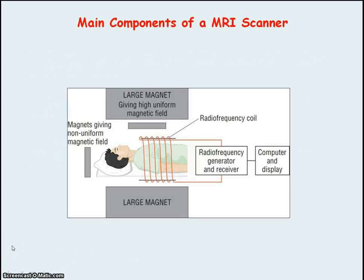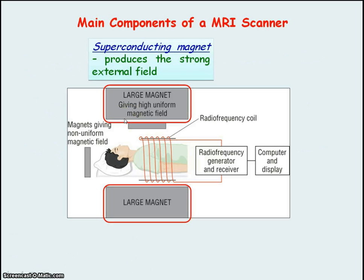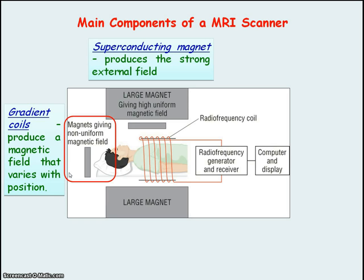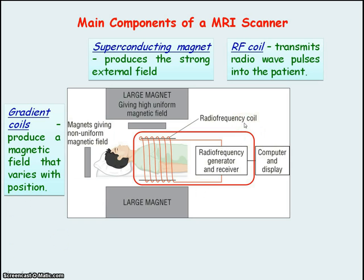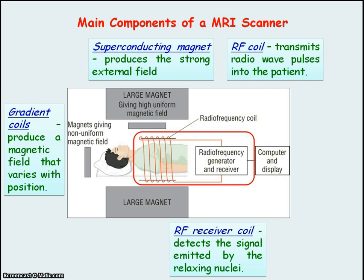There are five main components of an MRI scanner. First, the large superconducting magnet, which produces the strong external field along which the hydrogen nuclei align and precess. You also have gradient coils, which vary the magnetic field across the patient's body. The radio frequency coil transmits the radio wave pulses into the patient, which are absorbed by the hydrogen nuclei, exciting them into the higher energy state. When the RF transmitter coil is switched off, the same coil can act as a receiver and detect the radio frequency signals emitted by the relaxing nuclei.